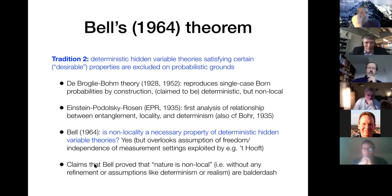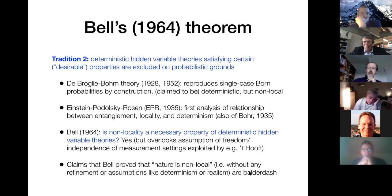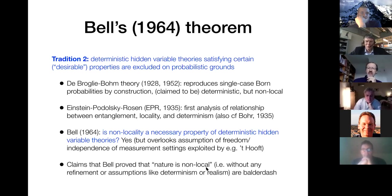There are claims that Bell proved that nature is non-local full stop, without any refinement of what non-locality means, or without any assumptions like determinism or realism — these claims are 'bosh'. This is a word I learned from Michel Janssen while writing a book about general relativity and black holes, where I described one of Einstein's arguments as bosh, and he learned it from John Earman.